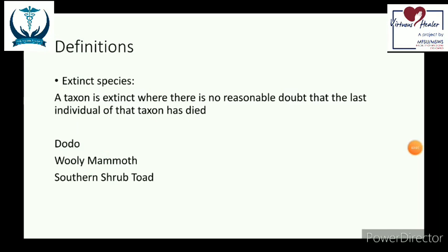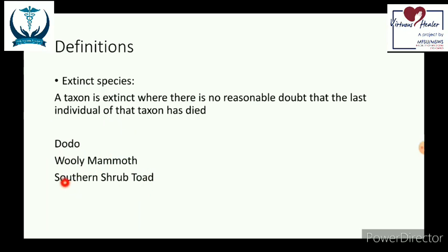An extinct species is one where there is no doubt that every last individual has died. Examples include the dodo, the woolly mammoth, and Sri Lanka's own southern shrub toad — all categorized as extinct because beyond any reasonable doubt every last individual from these species has died.